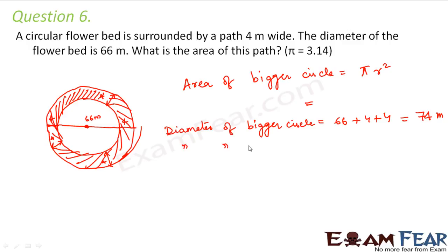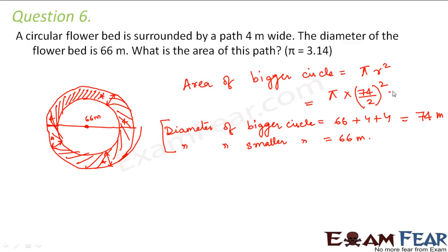The diameter of the smaller circle is 66 meters. Now if we know the diameter of both circles, we can find the radius. The area of the bigger circle is π r², and the radius is half the diameter, that is 74/2, which is 37. So the area is π × 37 × 37, which is 1369π. This is the area of the bigger circle.